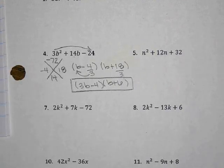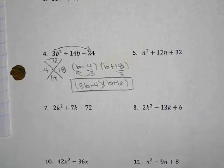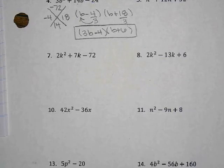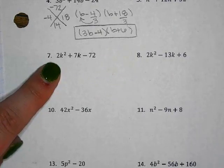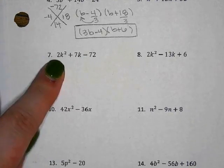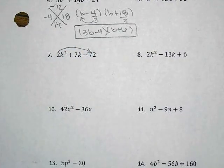Let's do number 7. It has a number in the front. Does 2 go into 72? Yes. But does 2 go into 7? No. So the 2 can't divide out — same type as before. We multiply 2 by negative 72 to get negative 144. We're adding to 7.